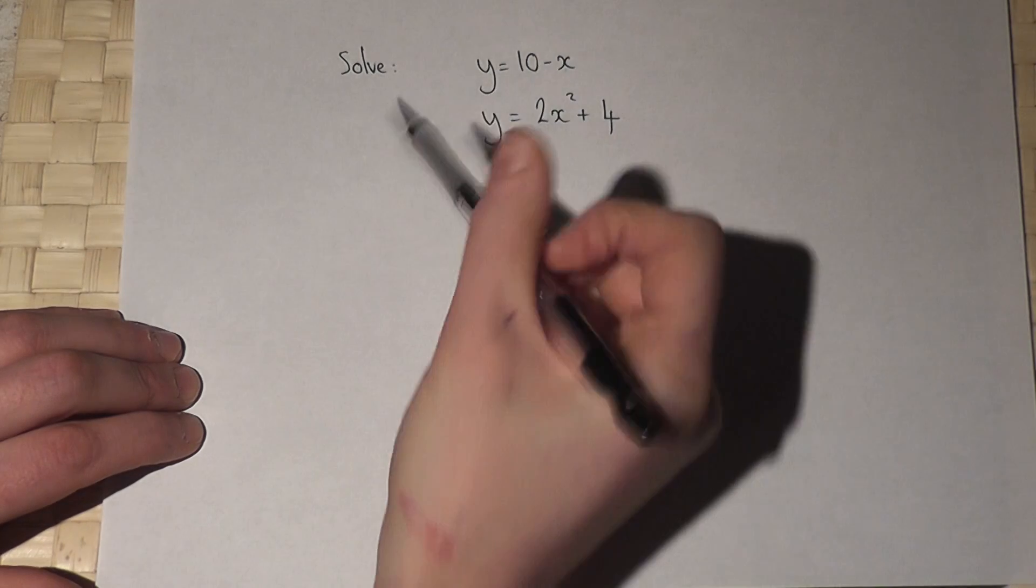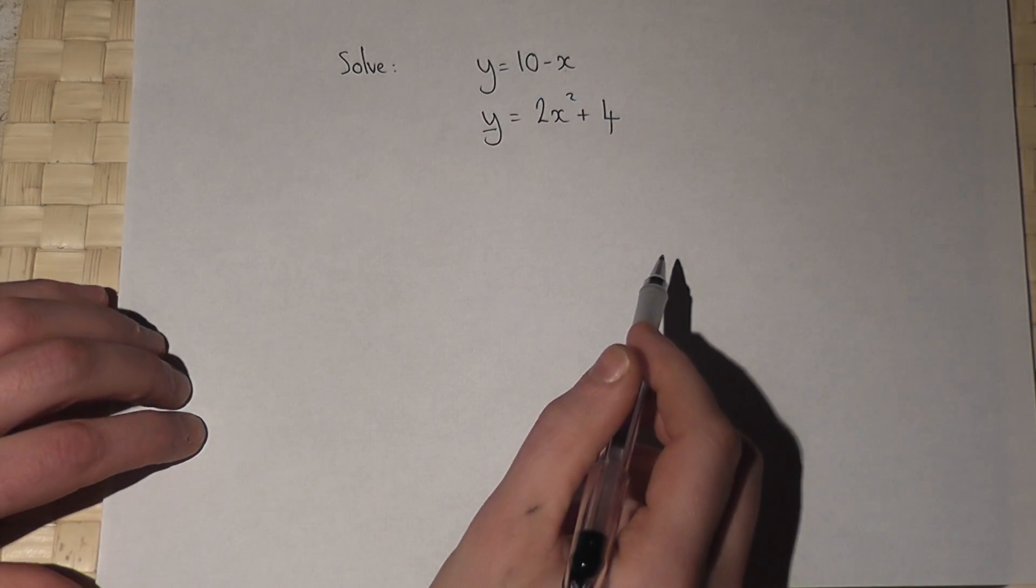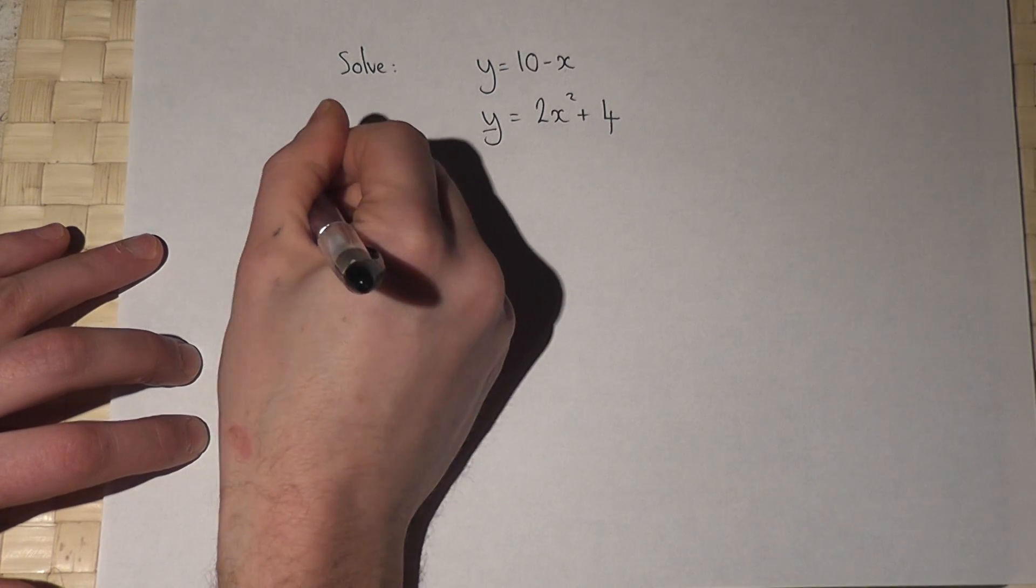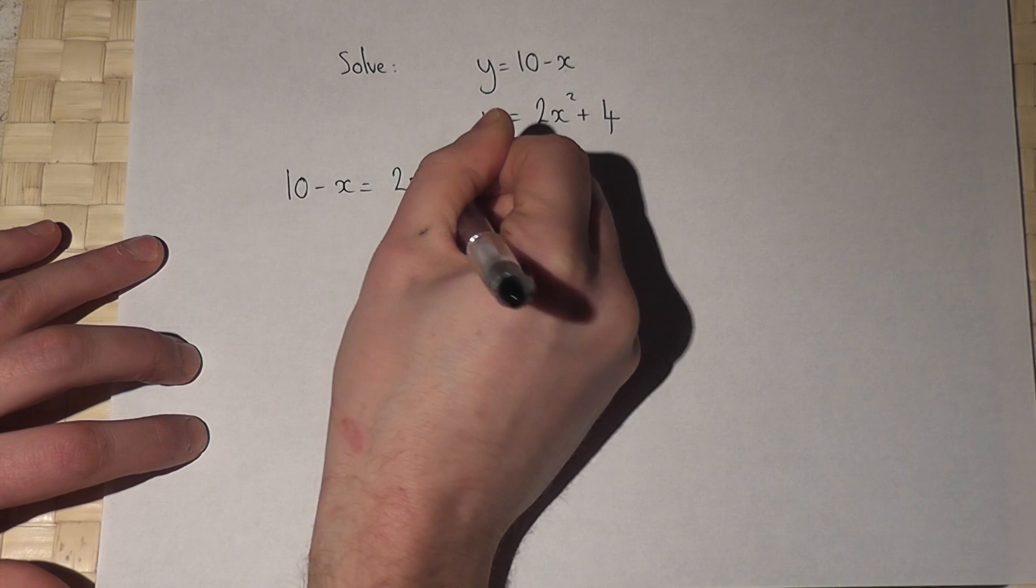So I can replace this y here by 10 minus x. That's called substitution. So 10 minus x equals 2x squared plus 4.